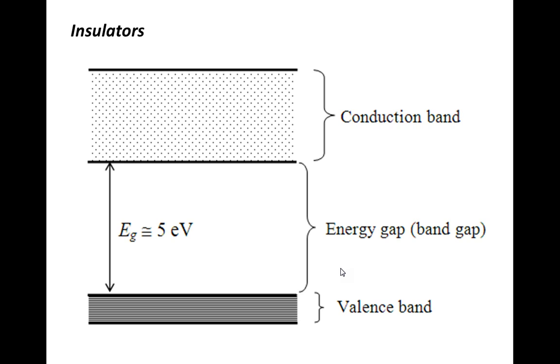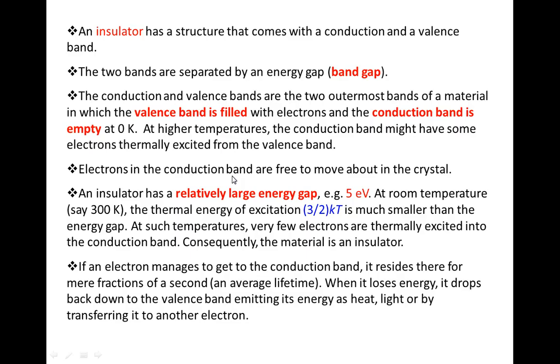Compare that to an insulator. In an insulator, the valence band is completely filled while the conduction band is completely empty at temperature T equals to zero Kelvin. There is a large band gap of five electron volts, and this large band gap means that a large amount of energy is required to bump the electrons from the valence band to the conduction band.